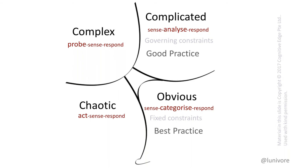In the Complex domain we have enabling constraints — heuristics, rules that don't apply all the time. For example, instead of requiring everything to go through full UAT with formal change requests, you add an exception: unless it's a tiny bug. That enables people to get small fixes done quickly. Making constraints permeable gives agility. So one of the first things I look for is where constraints are really heavy and where we can make them lighter.